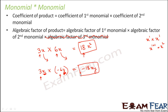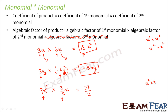One more example: 9x³ multiplied by (3/2)x. First find the product of the coefficients: 9 into 3/2 gives 27/2. Now the variable part: x to the power 3 into x equals x to the power 3 plus 1, which is x to the power 4. So the product is (27/2)x⁴.